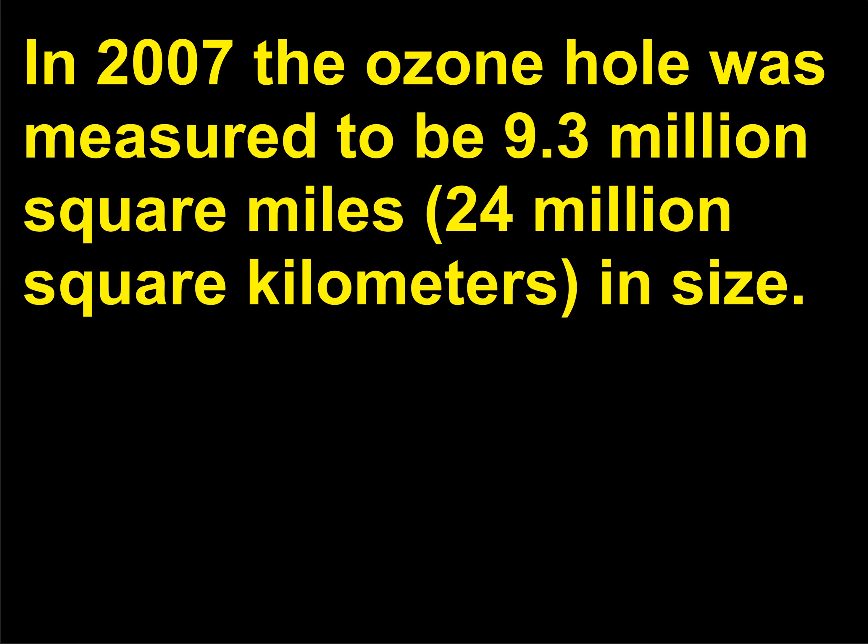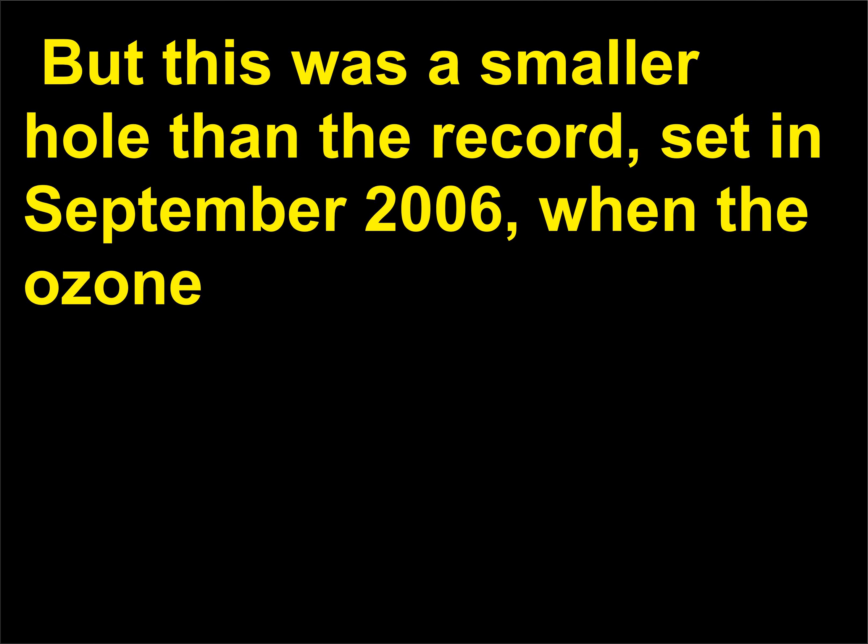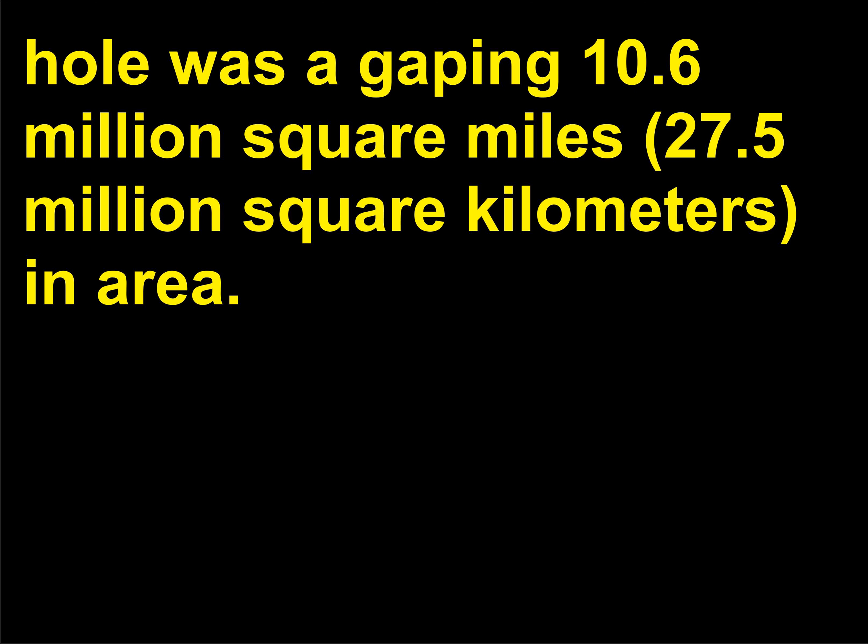In 2007, the ozone hole was measured to be 9.3 million square miles (24 million square kilometers) in size. But this was a smaller hole than the record set in September 2006, when the ozone hole was a gaping 10.6 million square miles (27.5 million square kilometers) in area.